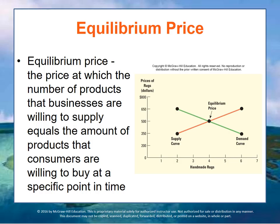The supply and demand curves intersect at a point where supply — where people are willing to sell at a price — meets the demand of people willing to buy that many at that price, creating a balance or equilibrium that is stable. The price where the number of products businesses are willing to supply equals the products consumers are willing to buy is called the equilibrium price. In our rug example, the company is willing to supply four rugs at $500 each, and the consumers are willing to buy four rugs at $500 each. Therefore, $500 is the equilibrium price for a rug at that point in time.